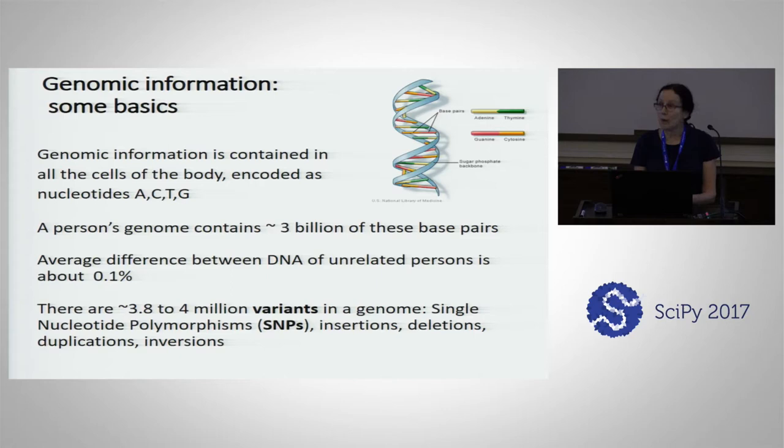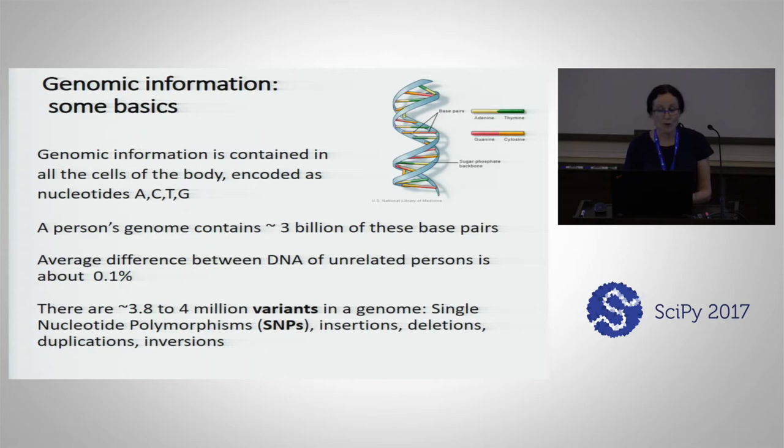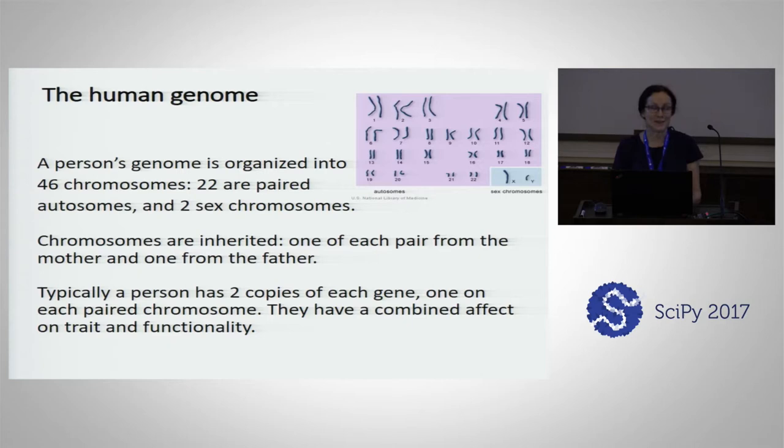These differences are cataloged in what we call variants of the genome. Single nucleotide polymorphisms, or SNPs, are one of the major ways of cataloging differences from person to person. There are also insertions, deletions, duplications, and inversions. But we're going to be focusing on SNPs.